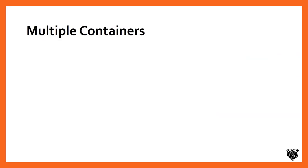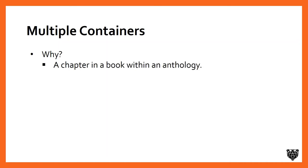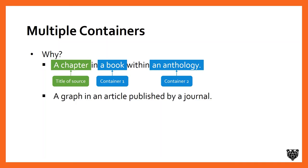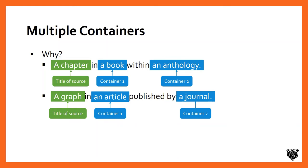Up to now, all the examples have been pretty simple — only one container or sometimes zero. But MLA recognized that sometimes there's a need for multiple containers, which throws students off. It's actually pretty common. For example, if you have a chapter in a book within an anthology, the title of the work is the chapter title, container one is the book itself, and container two is the anthology. It could also happen if you want to use just a part of a work — for example, a graph in an article published by a journal. The graph would be the title of the work, the first container is the article the graph is found in, and the second container is the journal that article is published in. MLA also wants you to indicate how you accessed the article. If you found it through a database, the first container is the journal and the second container is the database.